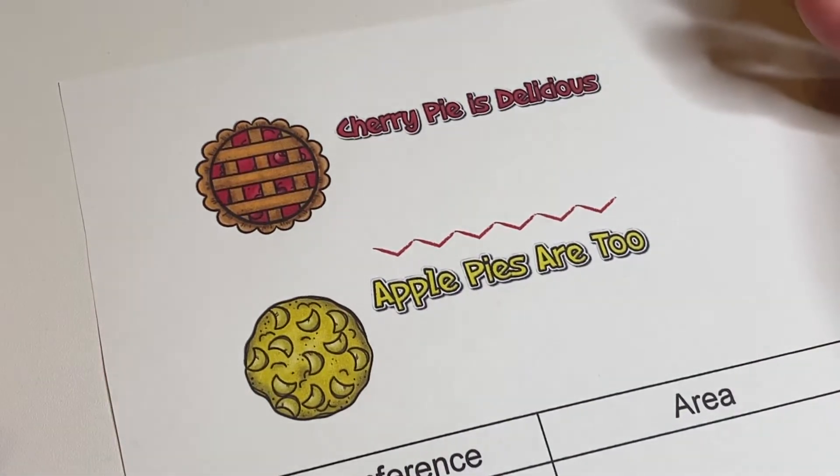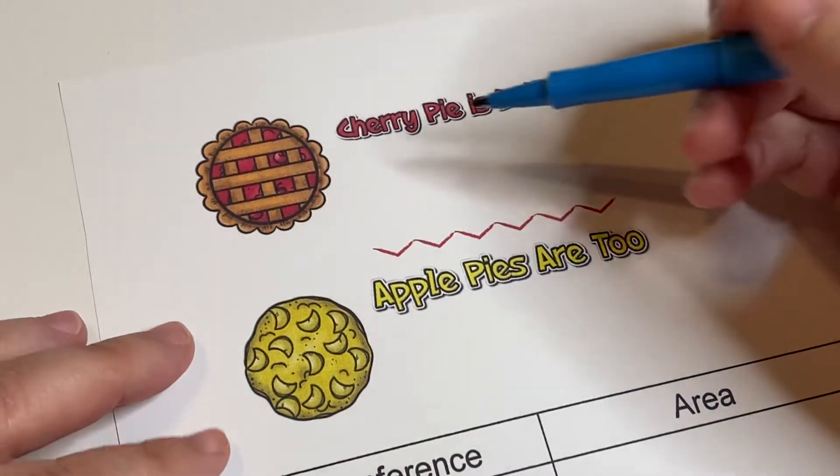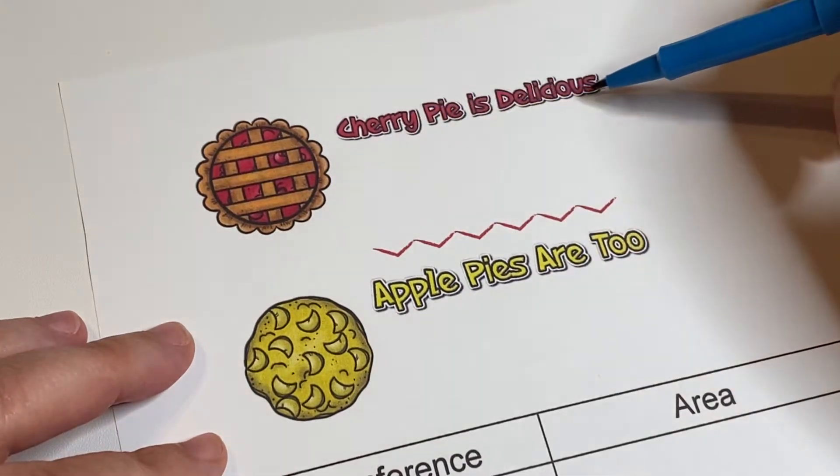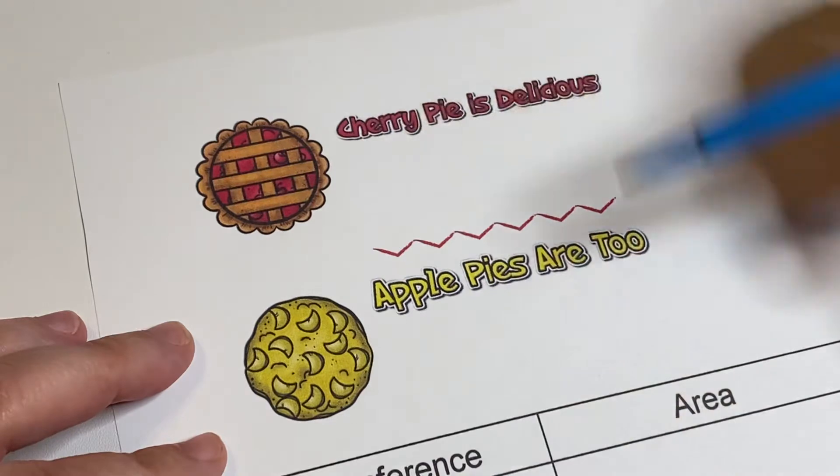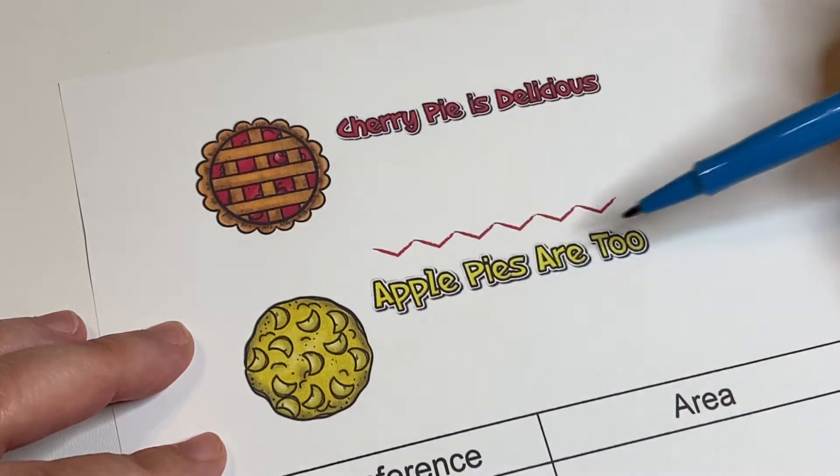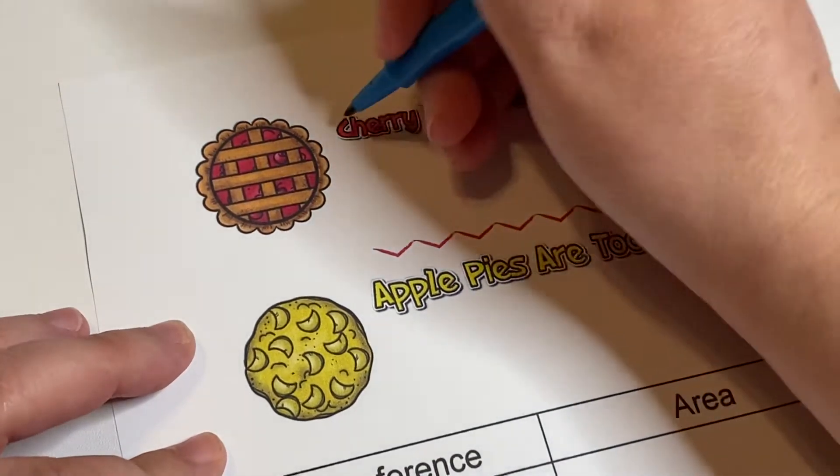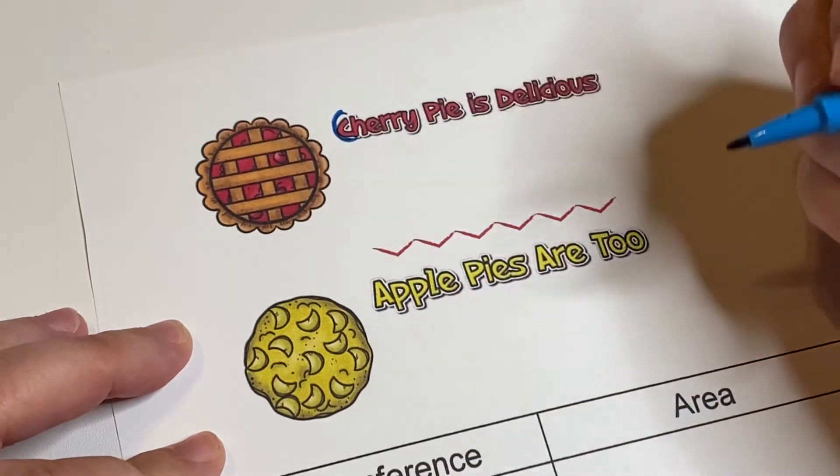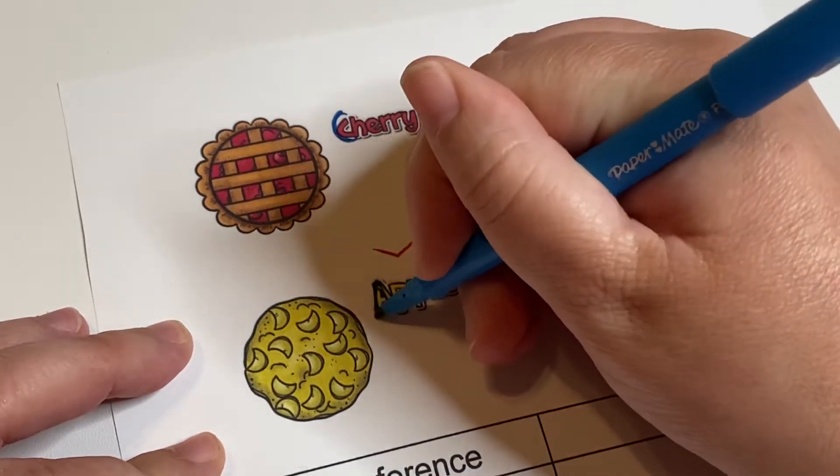So the first one says cherry pie is delicious - this is for circumference. And then apple pies are too - this is for area. So that C and cherry is for circumference, and this A and apple is for area.